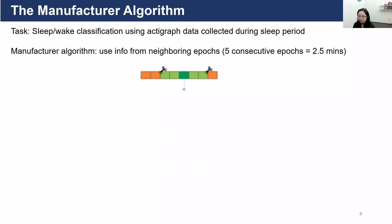How does the manufacturer algorithm work? Usually with these devices, you can obtain sleep estimates like duration of night sleep and how many wake-ups you have during the night. The basic logic of the manufacturer algorithm is that it uses information from neighboring epochs. In the case of Actiwatch, they use five consecutive epochs, equivalent to 2.5 minutes — a relatively short period. A weighted average of the activity counts for those five epochs is calculated, then compared to a threshold to decide whether the participant is asleep or awake.